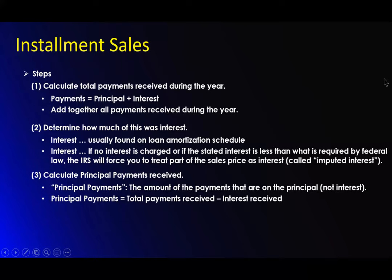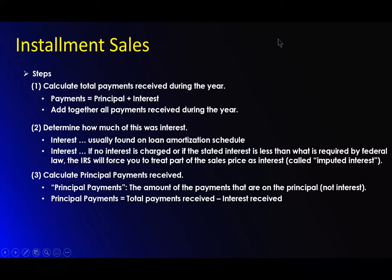Determine how much of this was interest. You have to determine how much of the actual amount was interest — usually on an amortization scale, where the greatest amount is at first and lesser amounts towards the end. Figure out what your loan amount was and how much each payment is based on its percentage of principal and interest. If no interest is charged, or if the stated interest is less than what is required by federal law, the IRS will force you to treat part of the sales price as interest. If there was no interest charged, you have to have imputed interest — they are assuming there will be some interest.